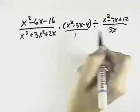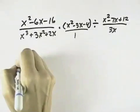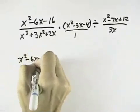With multiplication, we can put this over 1. With division, we're going to need to flip and multiply. So our first fraction will remain the same.